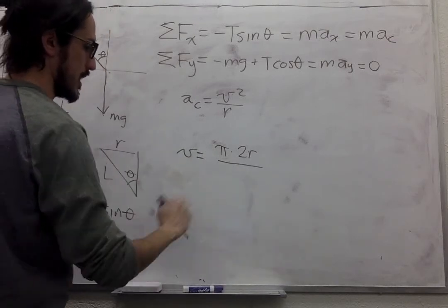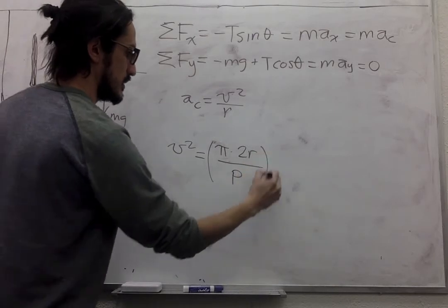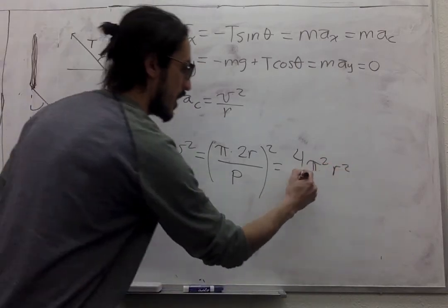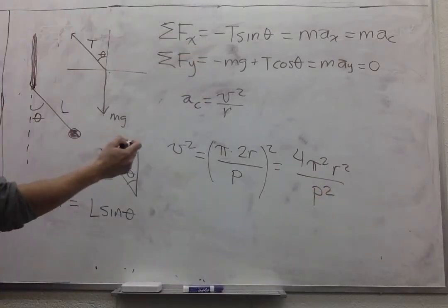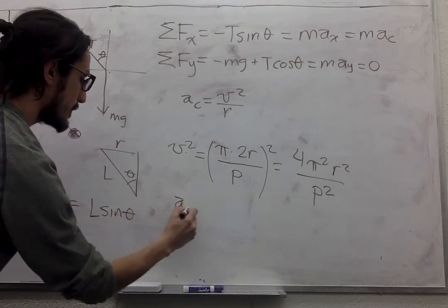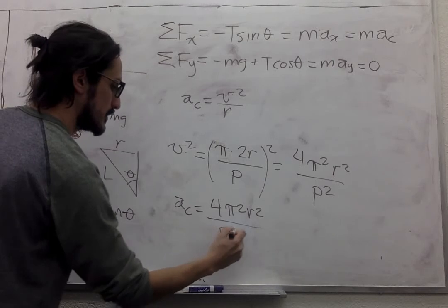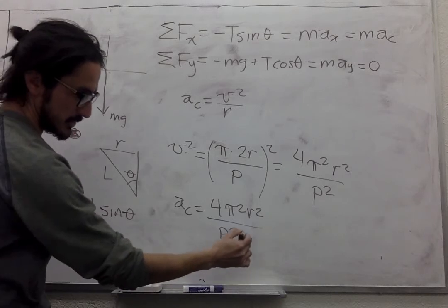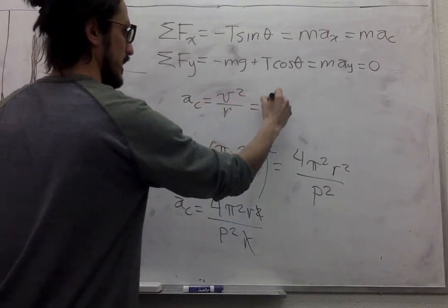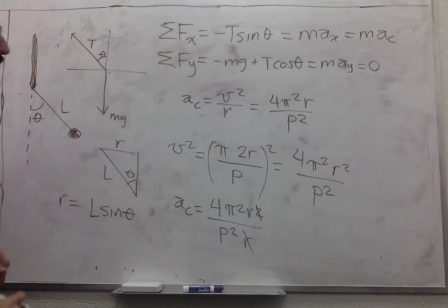So then you can solve for the velocity. Put the period over here. And then we can take the square of this. So this is 4π² R² over P². So we get rid of this R and this R. And so this centripetal acceleration is 4π² R over P².